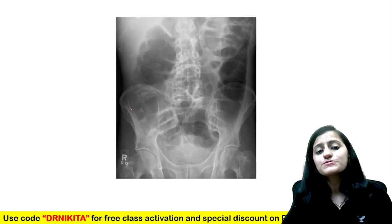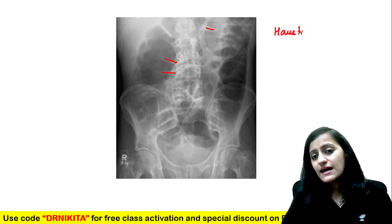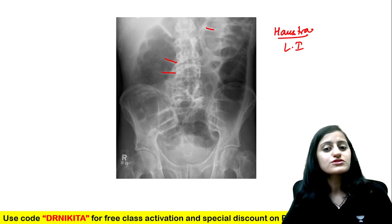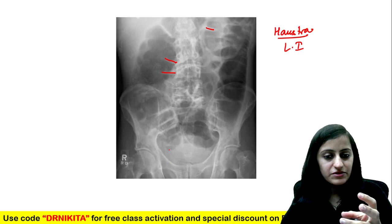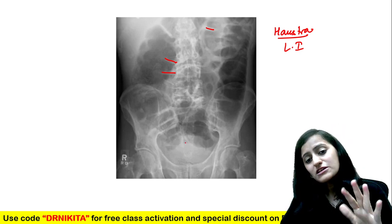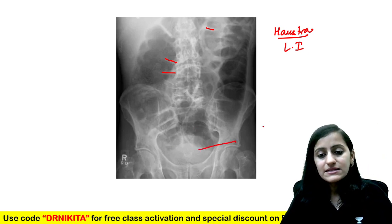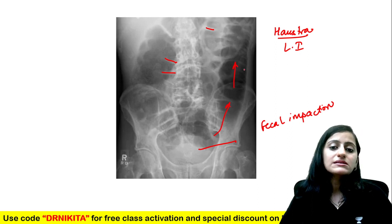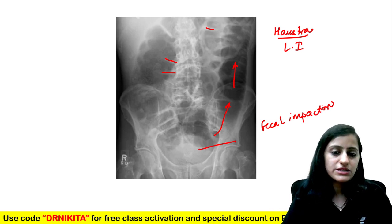These bowel loops with incomplete projections are called haustrations, and that tells us this is the large intestine which is dilated. Looking at the radiograph, whenever you see bowel loops dilated, we should always check the rectal area. Air appears black on radiograph. Normally we should see air there; if we don't, that means there is some obstruction. Here, something is impacting in the rectum — this is fecal impaction — which has caused the proximal large bowel dilatation. The cause can be confirmed by manual examination or anoscopy.